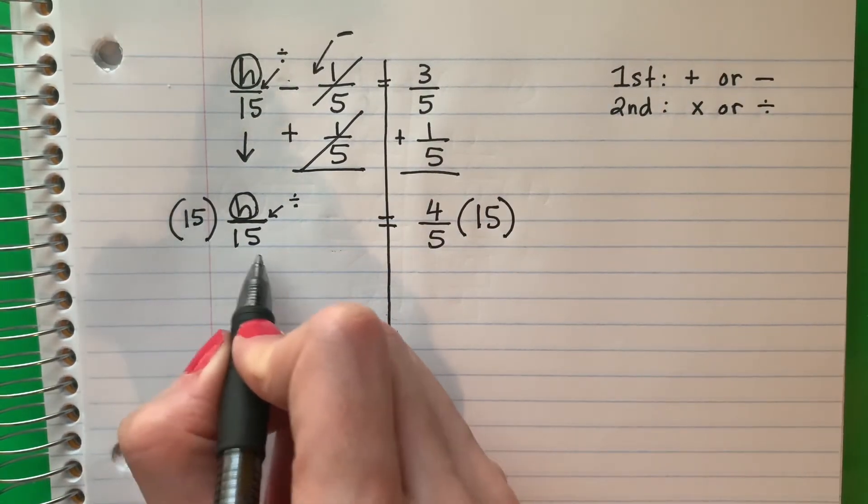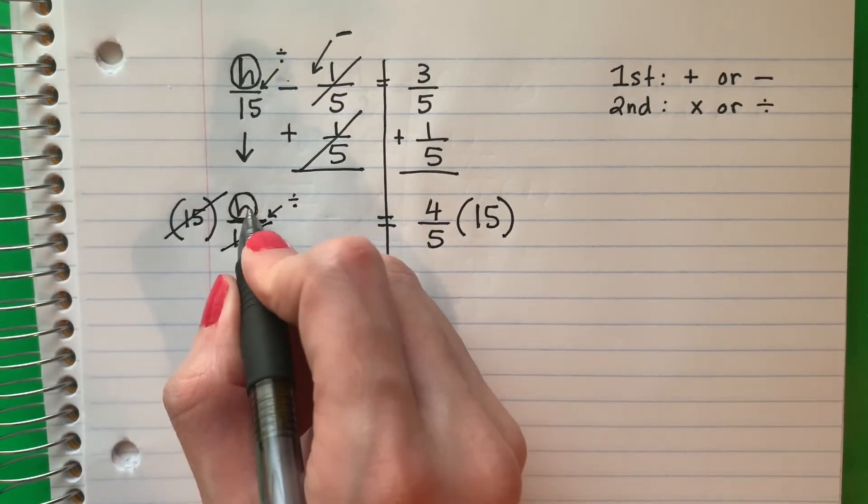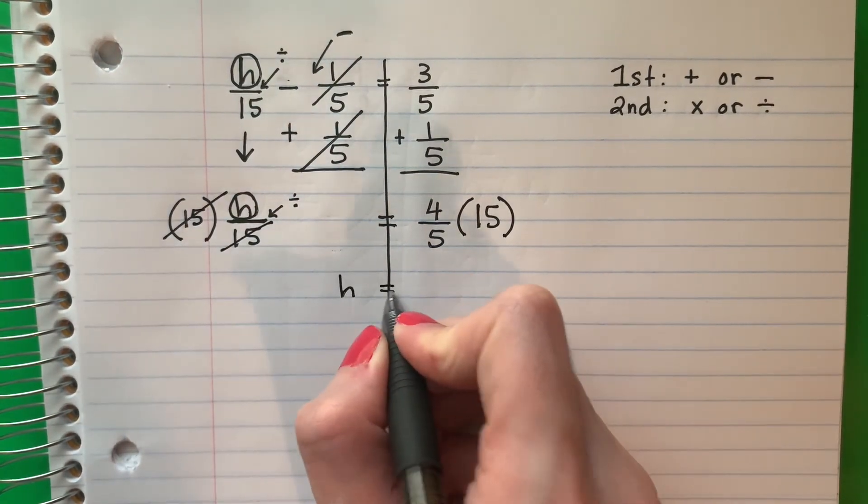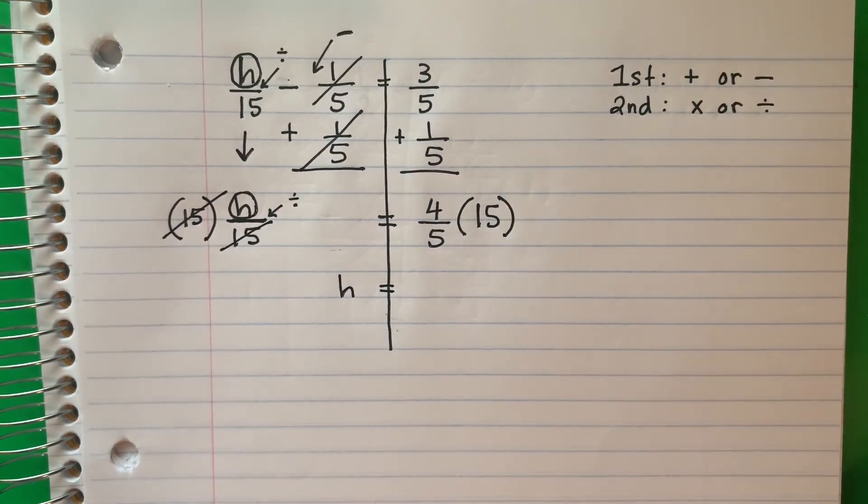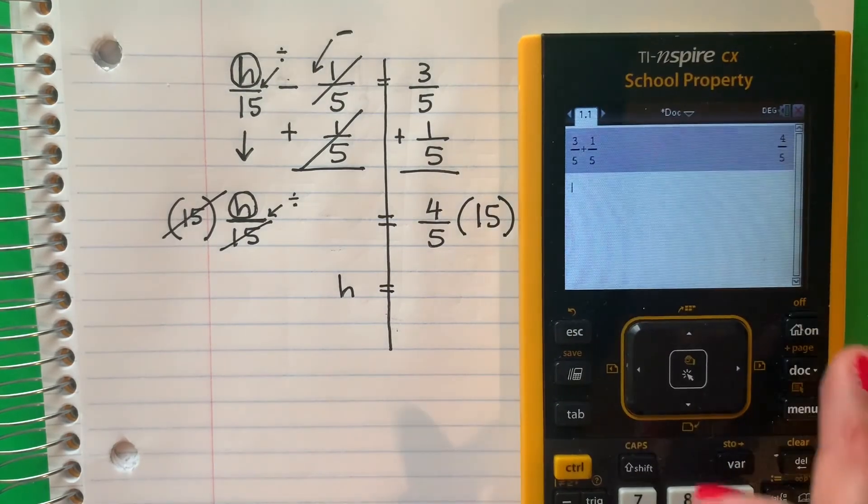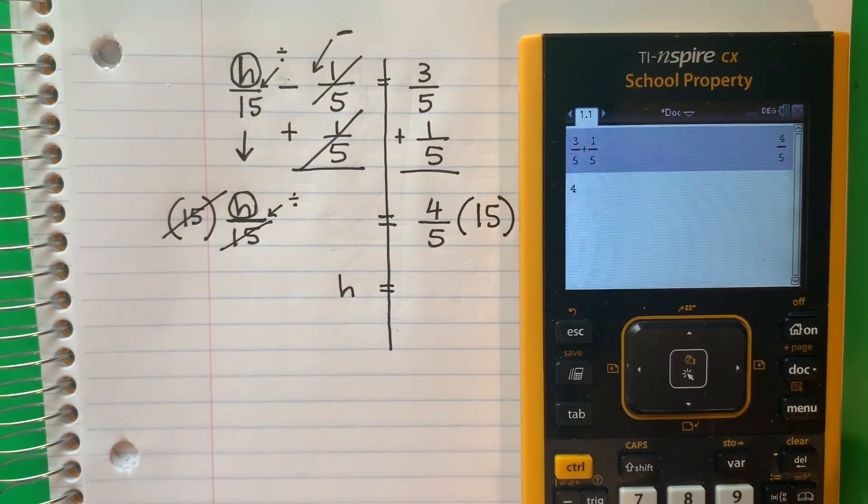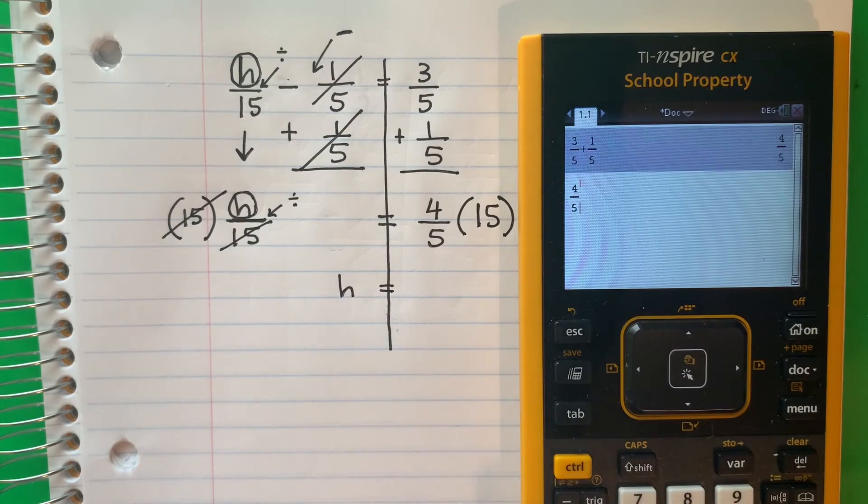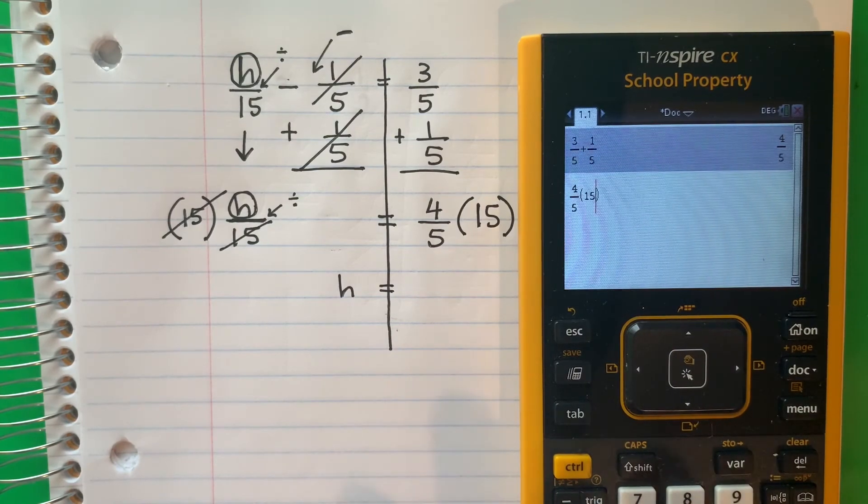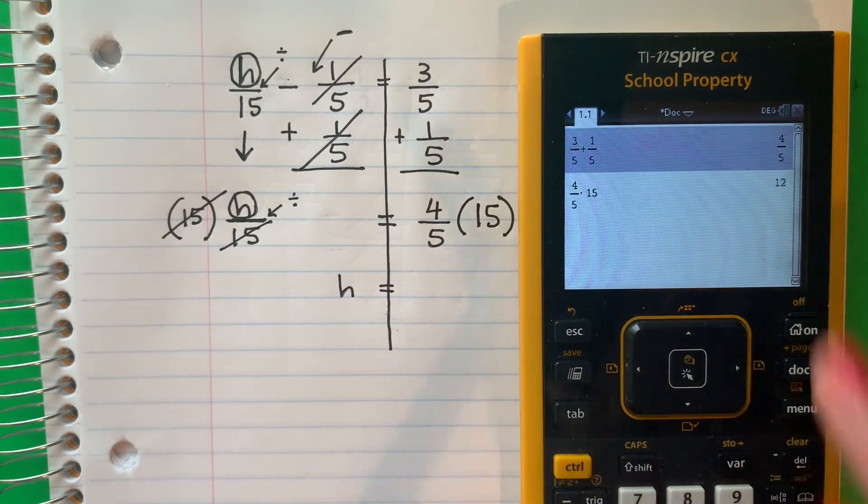15 divided by 15 is 1. It cancels. And I get H equals. I will put this in the calculator. Exactly the same. So I will put 4 fifths. And I will go to the right. Parenthesis 15. Parenthesis. Enter. And I get 12.